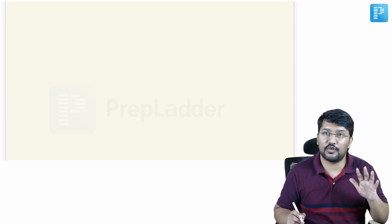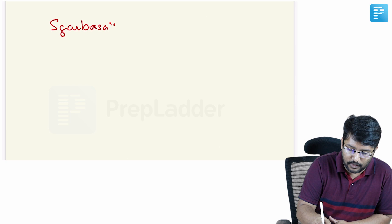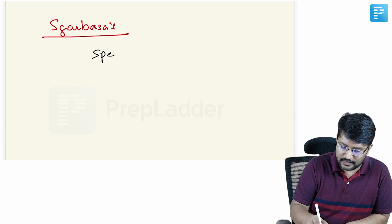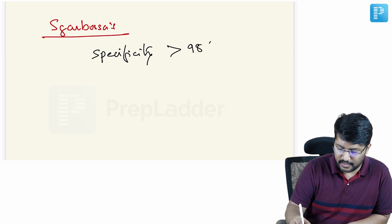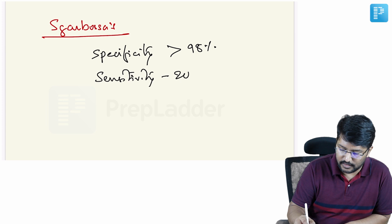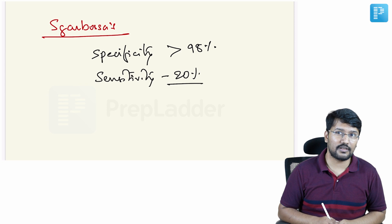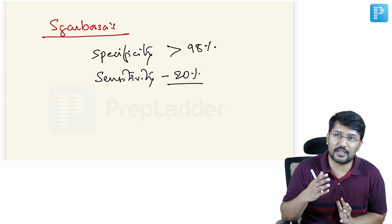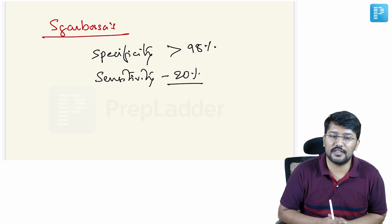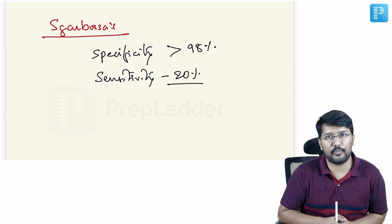Having understood this, to what extent are we certain when we encounter these findings? Sgarbossa's criteria has a very poor sensitivity — it has high specificity exceeding 98 percent, but when it comes to sensitivity, it is barely 20 percent. The sensitivity varies according to the component being discussed — concordant ST elevation, depression, or discordant ST elevation — but in general, sensitivity does not exceed 20 percent. That means we will end up missing those cases of MI which do not fit the criteria. When we identify these changes we are sure we are dealing with myocardial infarction, but when we don't, we still end up missing 80 percent of those cases.